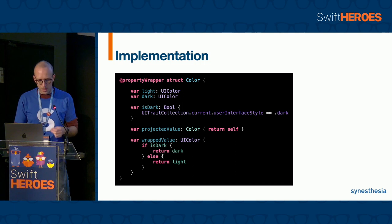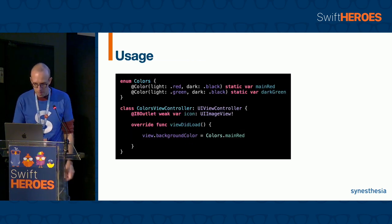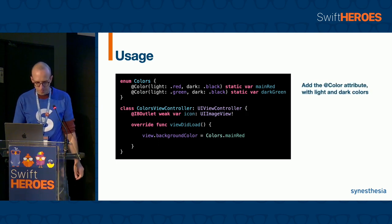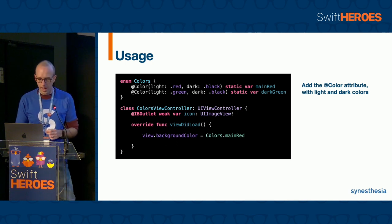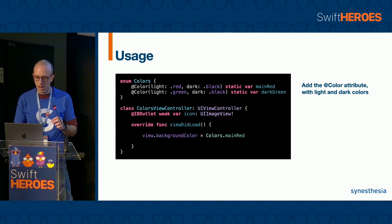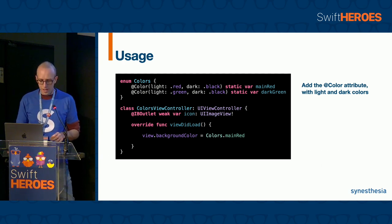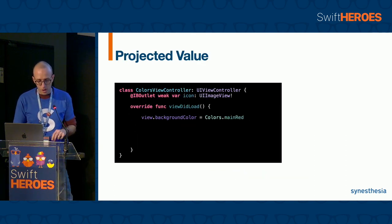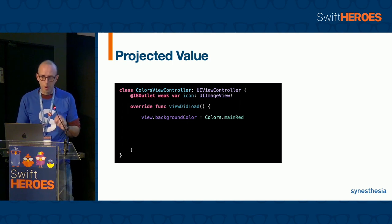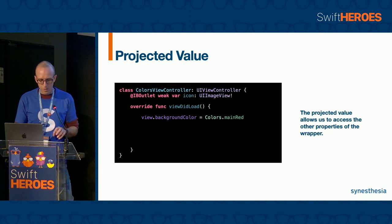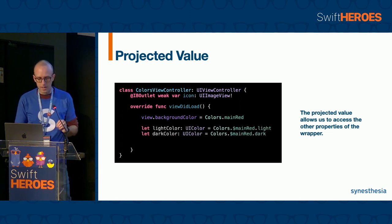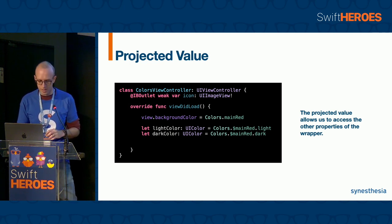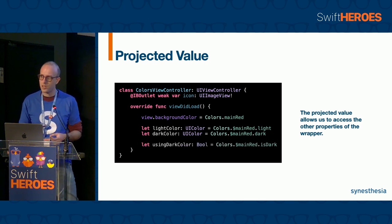In the wrappedValue, we return the right color based on the isDark property. We can also add the projected value that in this case returns self. We now have to add the @Color attribute for every case of our enumeration, passing to it the light and the dark color, and we don't have to change anything else in our code. Using a property wrapper, the syntax becomes cleaner and the solution is more elegant. We can also access the other wrapper properties through the projected value — in this case, we can access the dark and the light colors in case we want to use them regardless of device appearance, or we can check the isDark property to know if the wrapper is using the dark color.